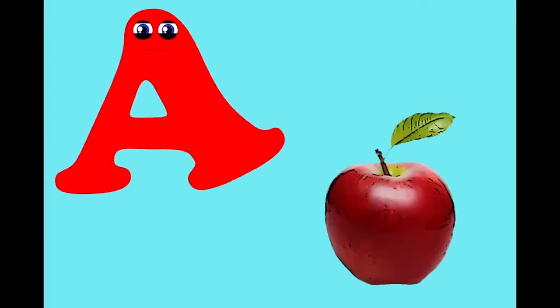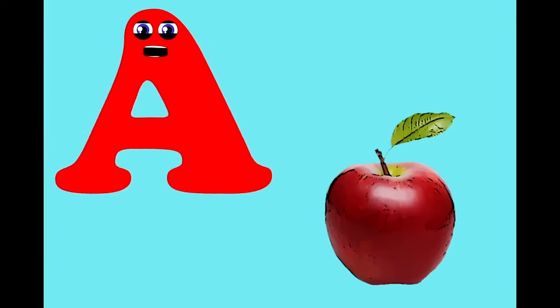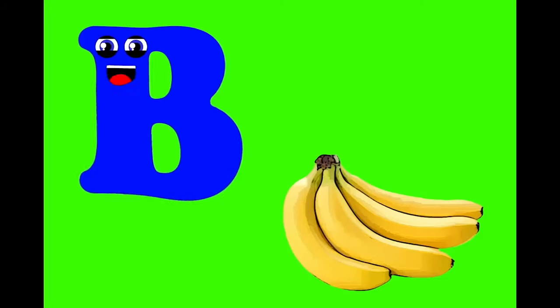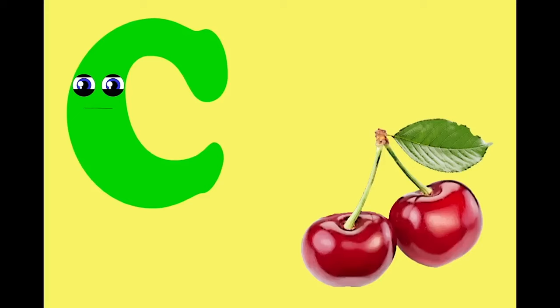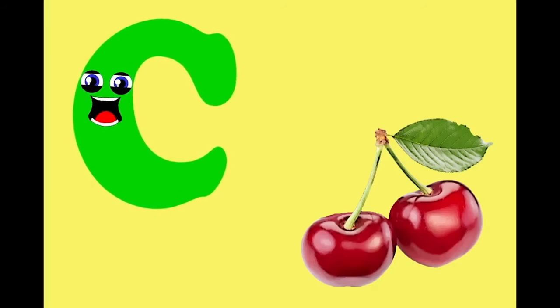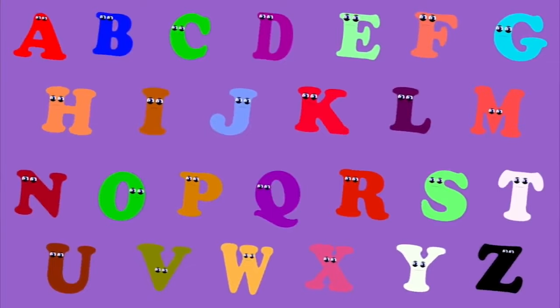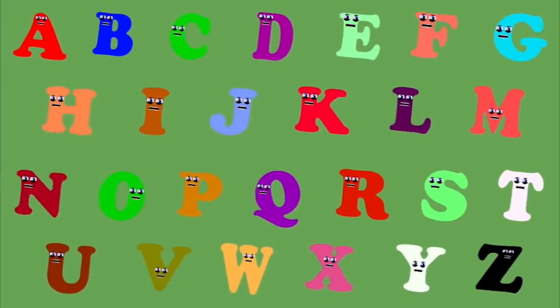A — it is the first letter of apple. B — it is the first letter of banana. C — it is the first letter of cherry. D — it is the first letter of date. This is a fruit phonics song, so come and sing along. Eat your fruit every day and you will grow real strong.